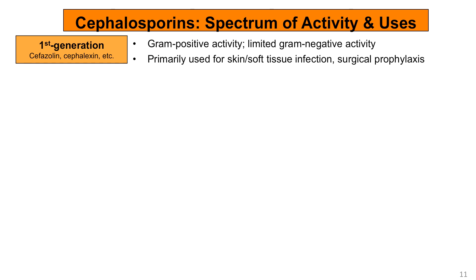For the first generation cephalosporins, these are narrow spectrum, with mostly gram-positive activity and very limited gram-negative activity. These are primarily used for mild or moderate skin and soft tissue infections due to susceptible organisms, such as MSSA, or for surgical prophylaxis.